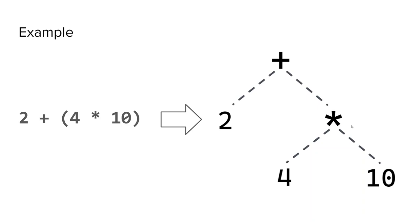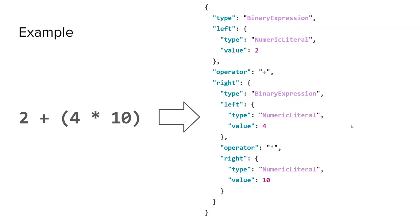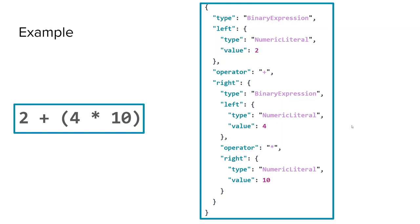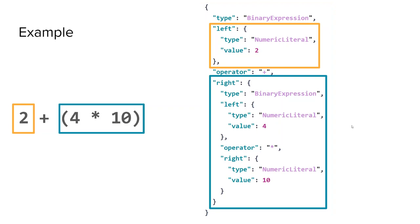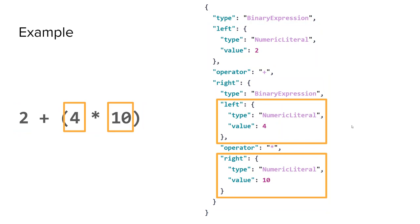A more common format is to represent this abstract syntax tree in a JSON format. Most tooling that relies on ASTs operates on a JSON structure like this. Here, the entire statement is considered a binary expression node with three primary properties: left, operator, and right. The left node is a numeric literal node representing the value 2. The right node, however, is yet another binary expression node, again with the properties left, operator, and right. This nested binary expression's left and right nodes are both numeric literals representing the values 4 and 10.